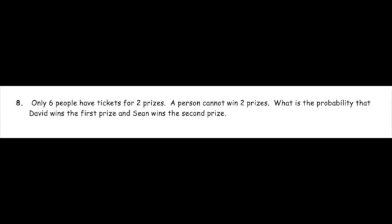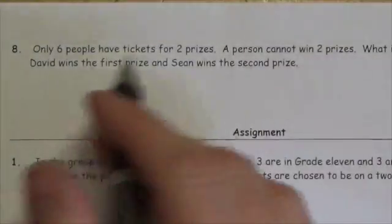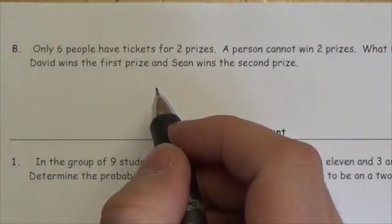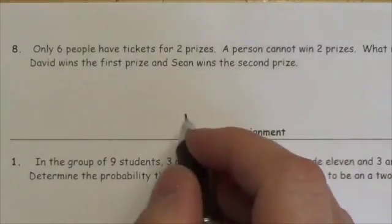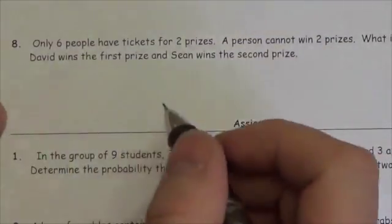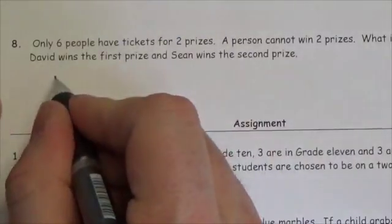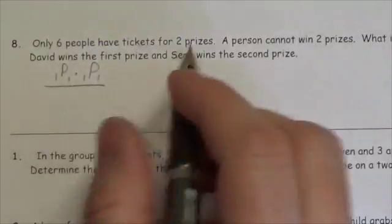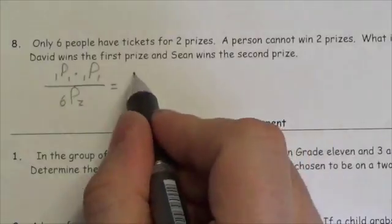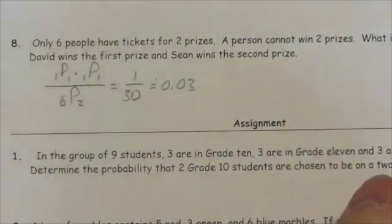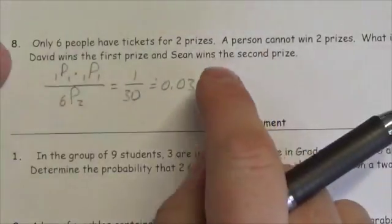Only six people have tickets for two prizes. A person cannot win two prizes. What is the probability that David wins the first prize and Sean wins the second prize? So in this case right here, this actually is more of a permutation than anything else here, because order is important here. If you change the order, you change who gets what prize here, right? I mean, we've got David and Sean here as being first and second, but you can switch the order, and that is a different result if Sean comes first here. So really, there's only one way this can happen. Now, you might think of it as there's one David, pick one, and there's one Sean, pick one. But the truth is that's only going to be equal to one. This will be one times one. In the denominator, we'll have 6 pick 2, because order is important. And this will become 1 over 30. And just to go to my calculator to get the decimal here, that's going to be approximately equal to 0.03. So it's like a 3% chance out of these six people that David will get first and Sean will get second.